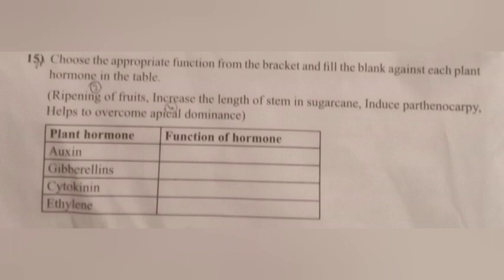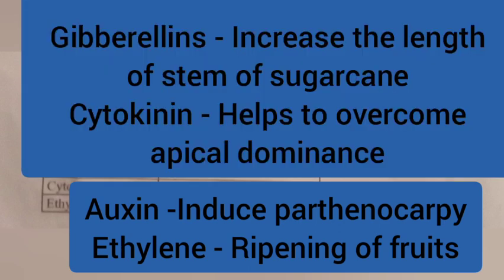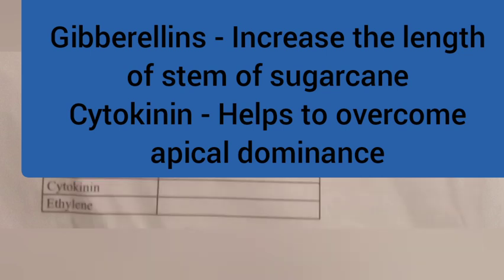Question 15. Choose the appropriate function from the bracket and fill in the blanks against each plant hormone in the table. Answer: Auxin — induce parthenocarpy; Ethylene — ripening of fruits; Gibberellin — increase the length of stem of sugarcane; Cytokinin — help to overcome apical dominance.